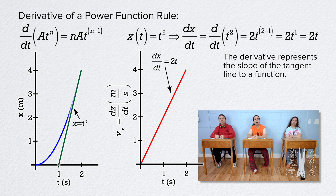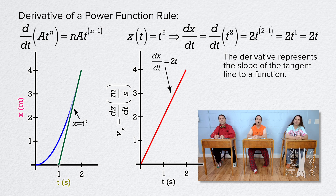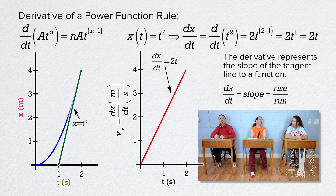It looks like for dx/dt, or the derivative of position with respect to time, position is on the y-axis and time is on the x-axis. Is it always the case that the numerator is on the y-axis and the denominator is on the x-axis? That is a good question. The derivative represents the slope of the tangent line, and slope equals rise over run. So it does make sense — the rise is the numerator and the run is the denominator.